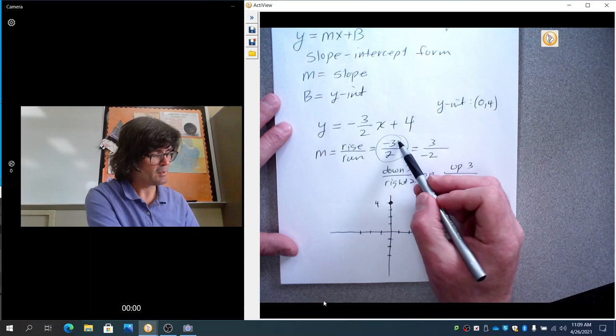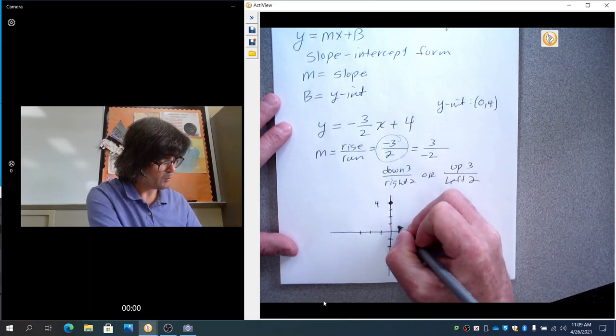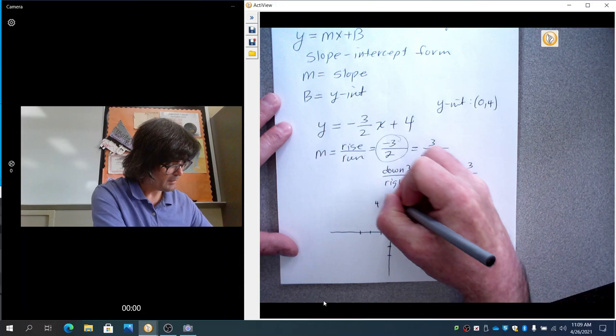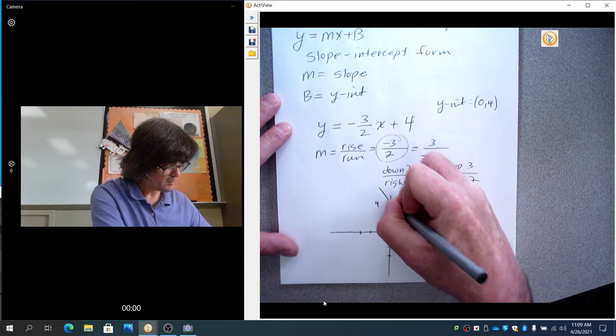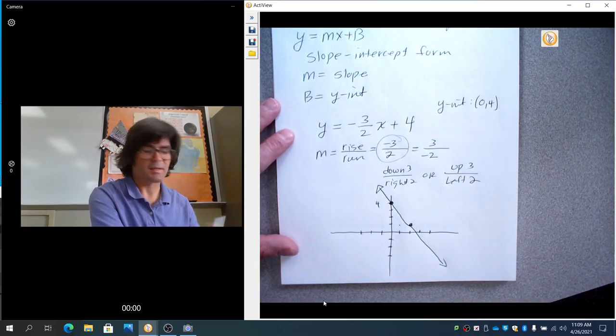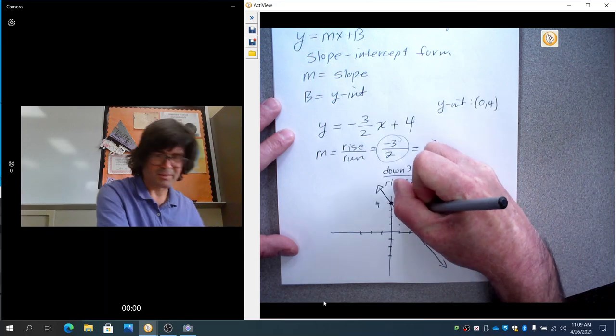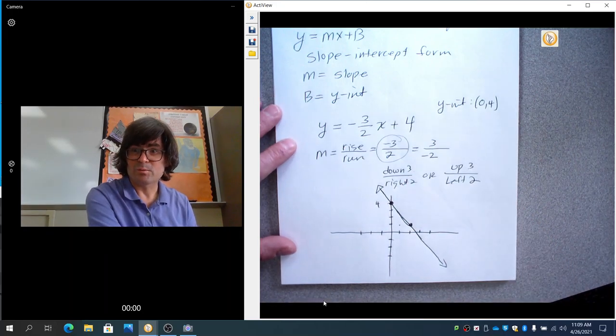And then I'm going to do my slope down 3, right 2. Go down 1, 2, 3, over 1, 2. And we're going to draw my line with those two points. So, that's a linear equation, just a straight line. It should look straighter than that, but there we go. Good enough. So, let's do one more.